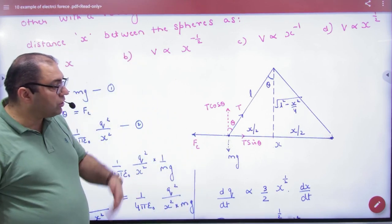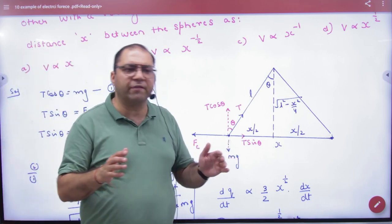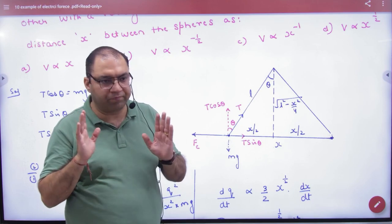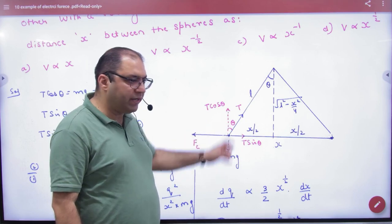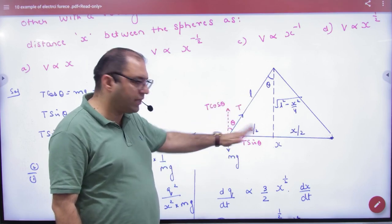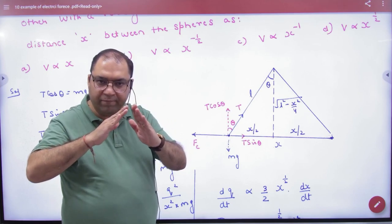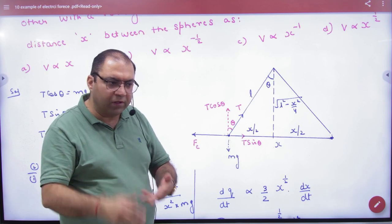Rule number one: Imagine that at any time, at any instant, the distance will be X. So this is the diagram. This charge has electrostatic repulsion, weight is mg, tension is T. In this instant, it is in equilibrium. Then there is another equilibrium because the charge is leaking.